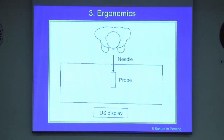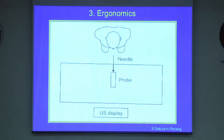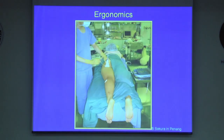The screen of the ultrasound display should be positioned directly in front of the block area. This line-of-sight positioning means that you only have to move your eyes and hands during the procedure. So you should position the patient in a way that allows you to reach the block area very comfortably.